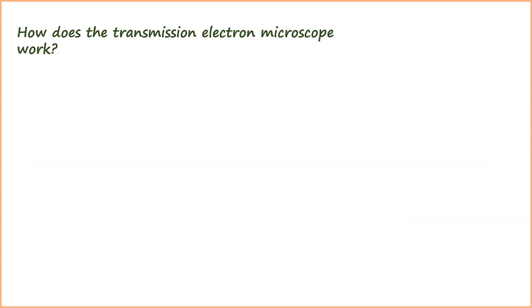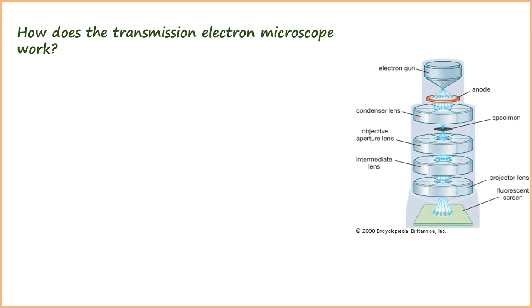Now, we will talk about how transmission electron microscope works. First of all, a tungsten filament is heated, which is also called an electron gun.